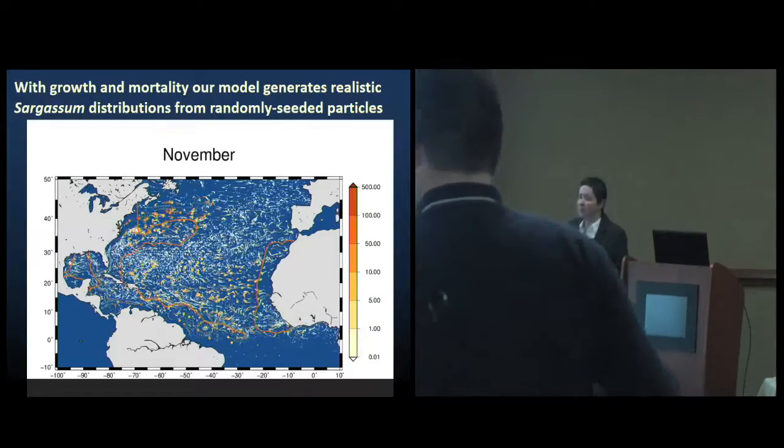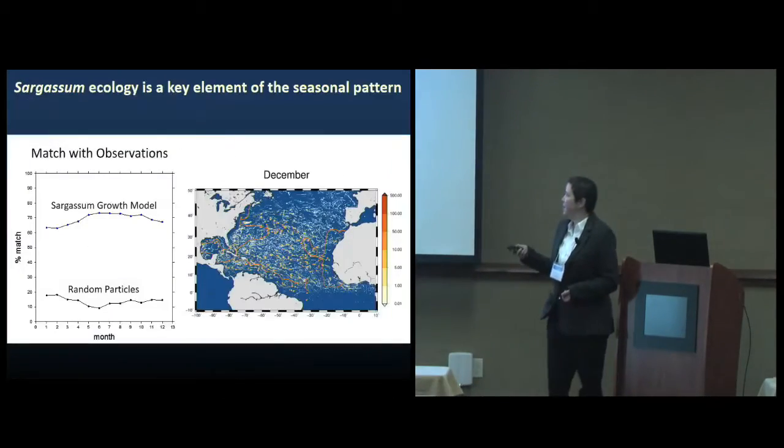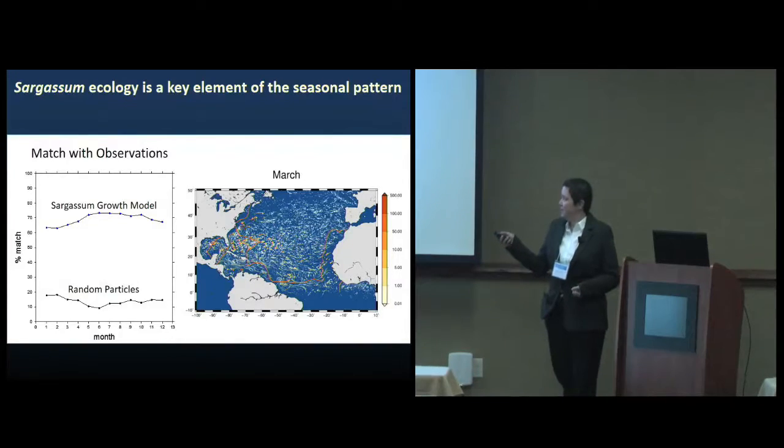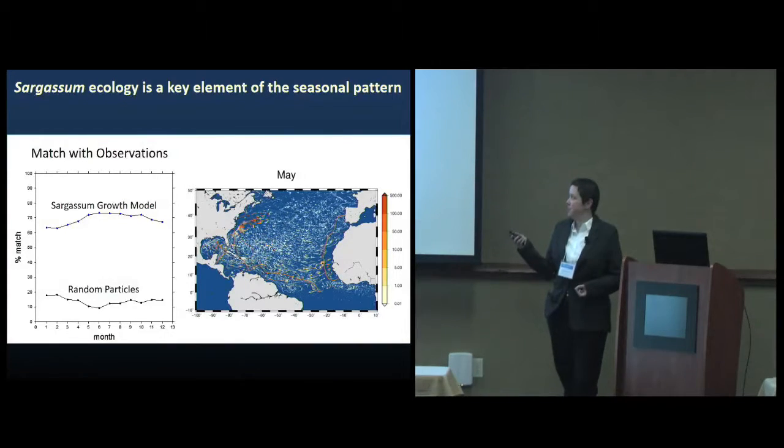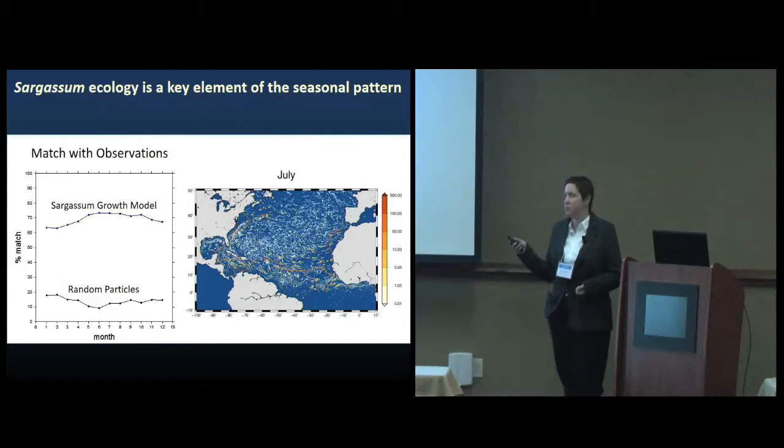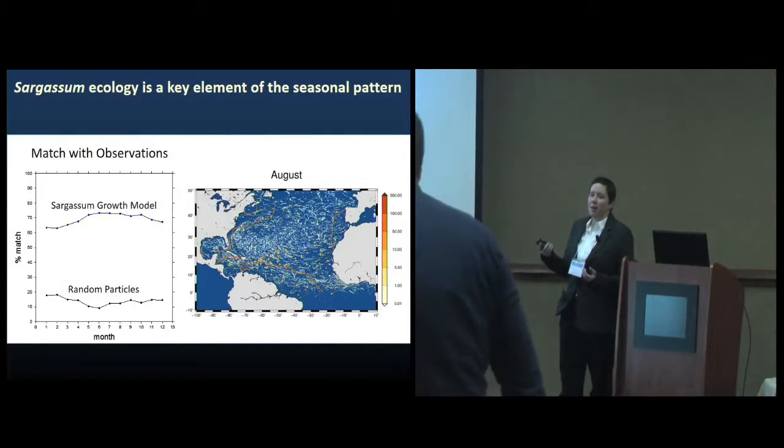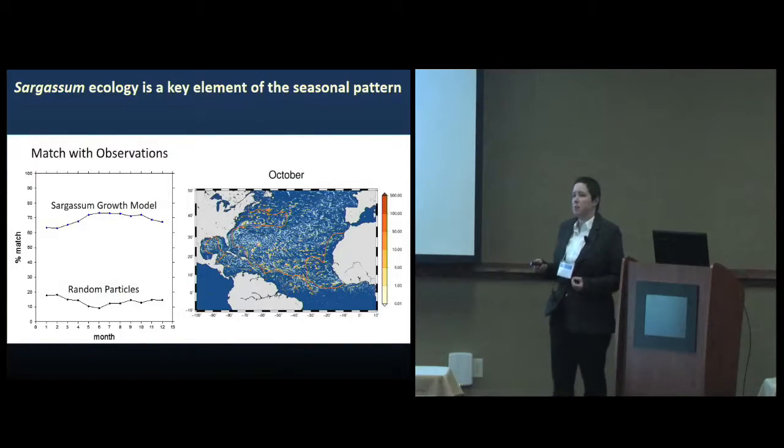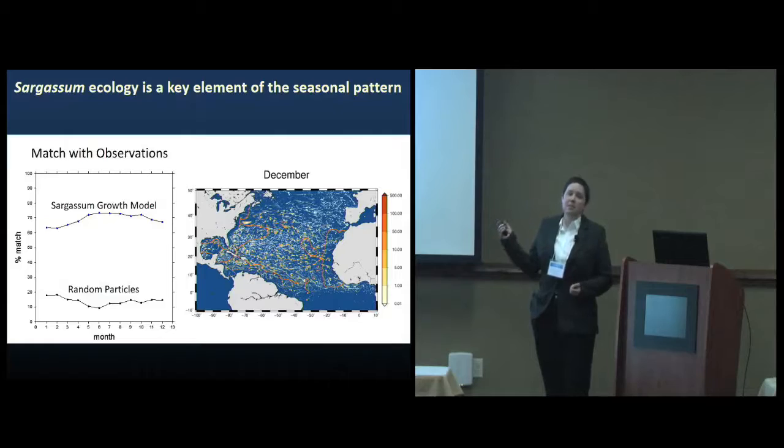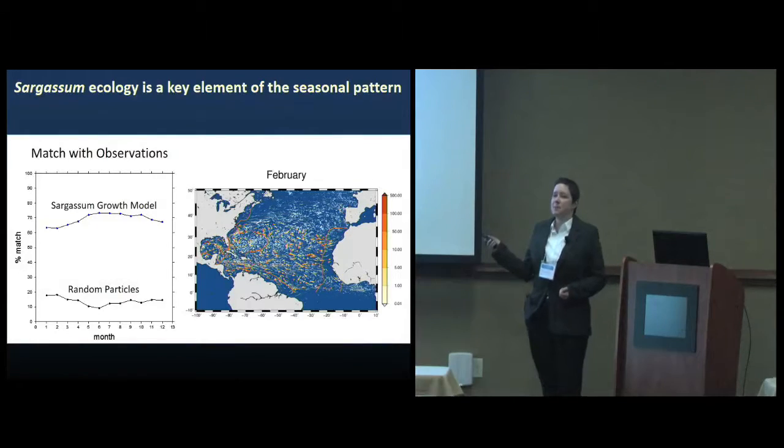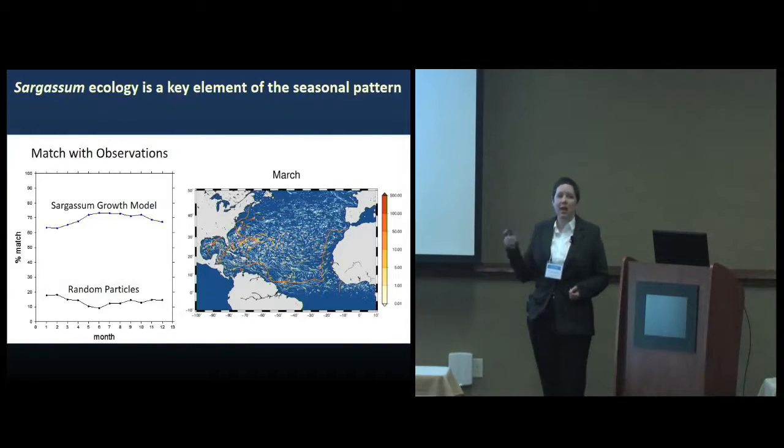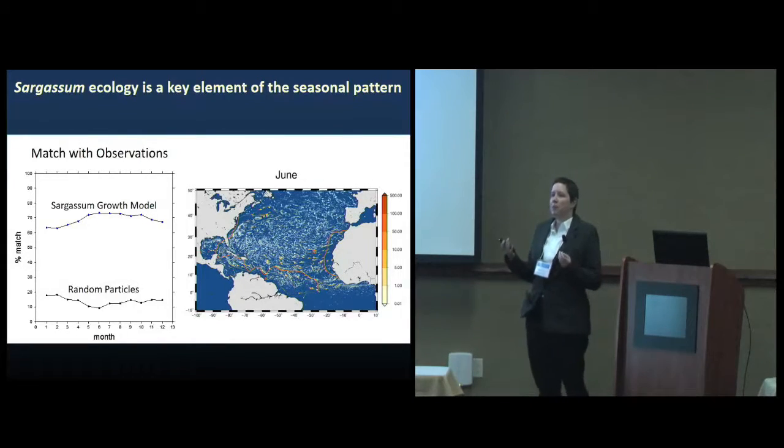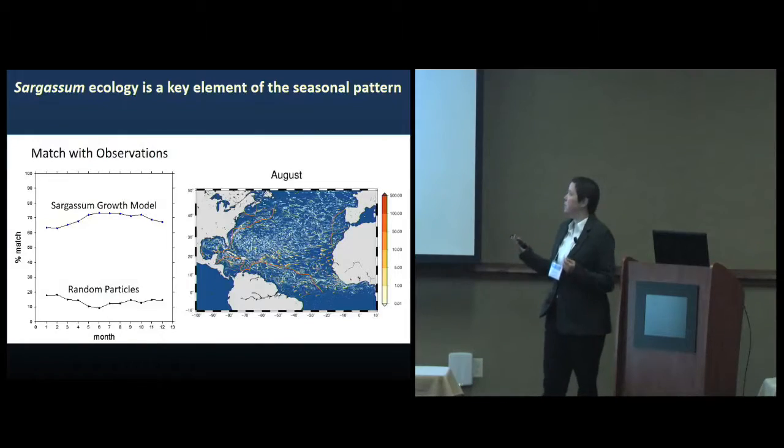Qualitatively it looks like we're doing a reasonable job here. When I quantify that, you can see that I get a much nicer increase in my match percent with observations. Now I can get about a 70% match over the course of the year with observations. More importantly, it's consistent throughout the year, so that tells me that I'm doing a good job of actually capturing that annual cycle.